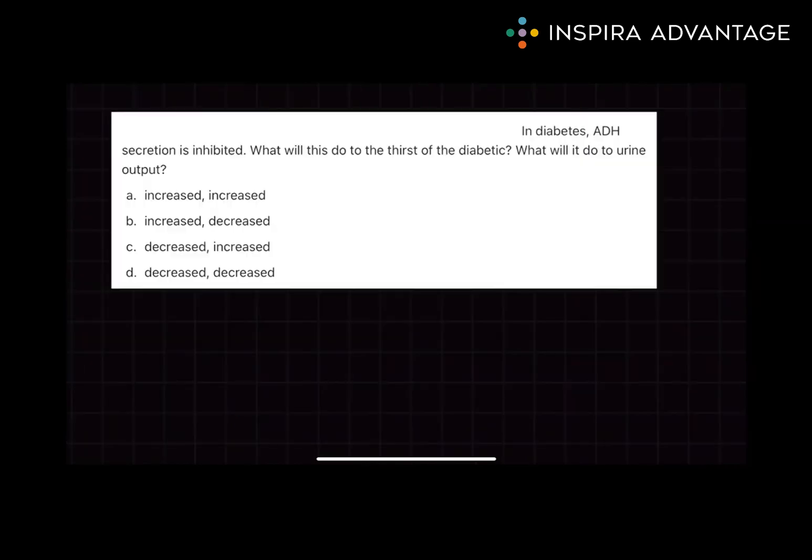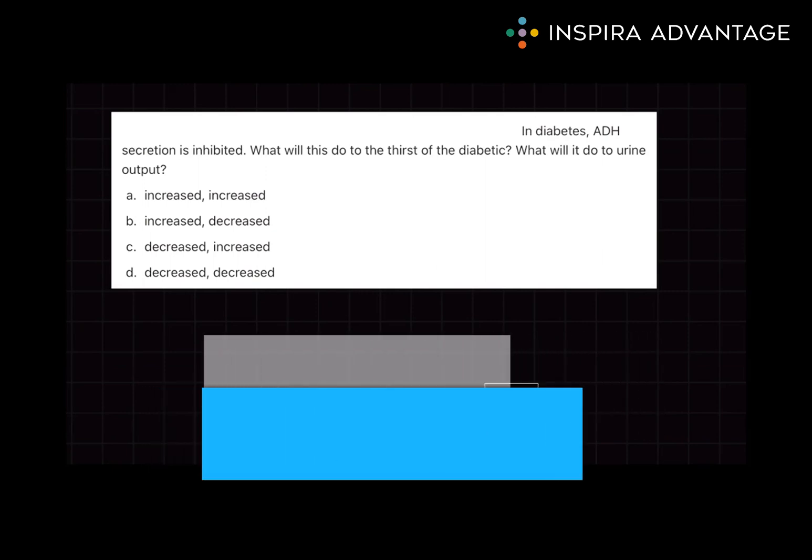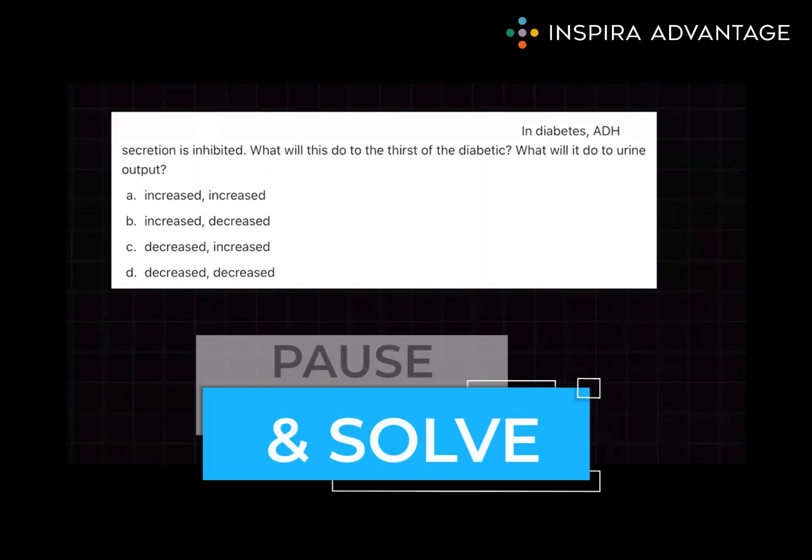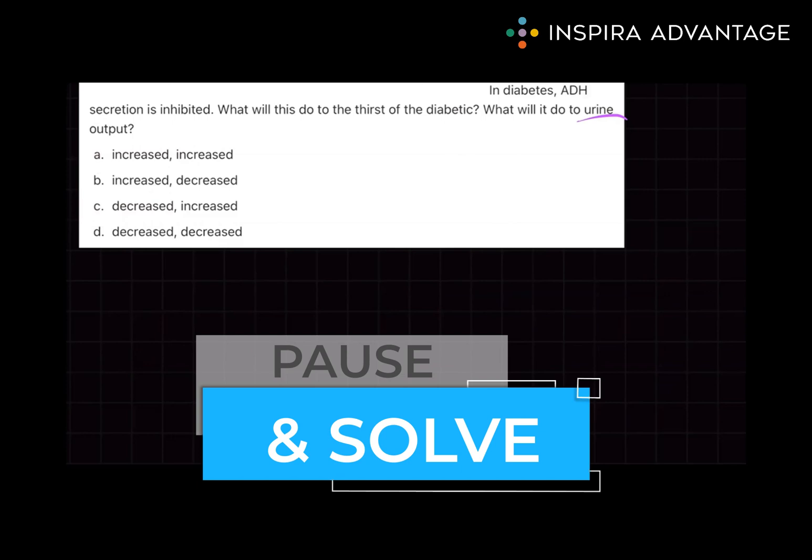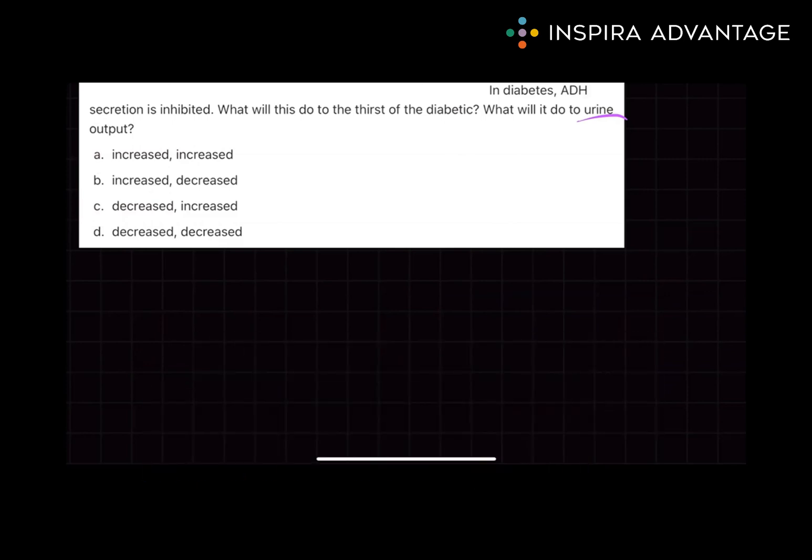So now let's practice an application of this, like you would actually see on the MCAT. In diabetes, ADH secretion is inhibited. What will this do to the thirst of a diabetic? And what will it do to urine output? Take a moment. Remember what we talked about with aldosterone and ADH and solve this.